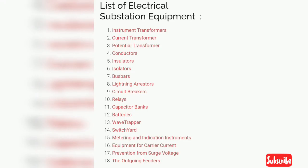The list of electrical substation equipment includes: 1. Instrument transformers, 2. Current transformer, 3. Potential transformer, 4. Conductors, 5. Insulators, 6. Isolators, 7. Bus bars, 8. Lightning arrestors, 9. Circuit breakers, 10. Relays, 11. Capacitor banks, 12. Batteries, 13. Wave trapper, 14. Switch yard, 15. Metering and indication instruments, 16. Equipment for carrier current, 17. Prevention from surge voltage, 18. The outgoing feeders.